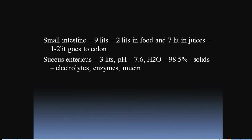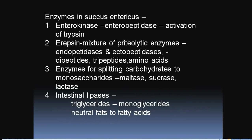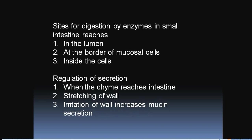The small intestine receives about 9 liters of fluid — approximately 2 liters from food and 7 liters from juices — and about 1 to 2 liters passes to the colon. Enzymes in succus entericus include enterokinase, erepsin, carbohydrate-splitting enzymes such as maltase, sucrase, and lactase, and intestinal lipase that converts triglycerides to monoglycerides and neutral fats to fatty acids. When chyme reaches the intestine, stretching and irritation of the wall increases mucin secretion.